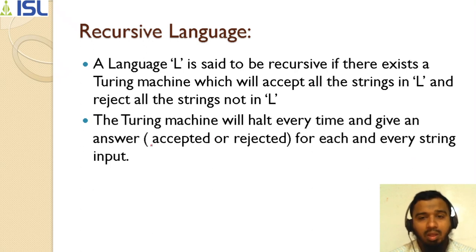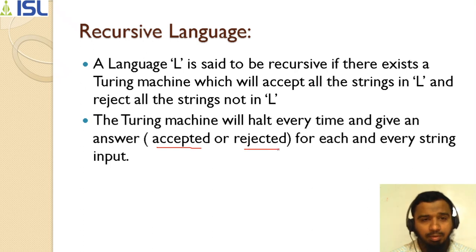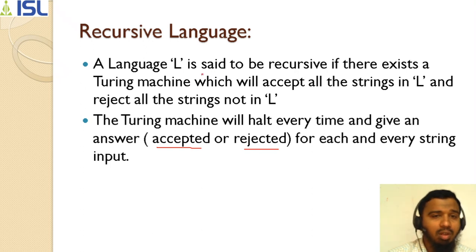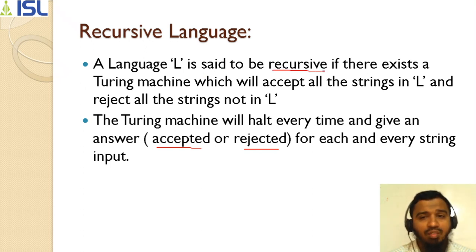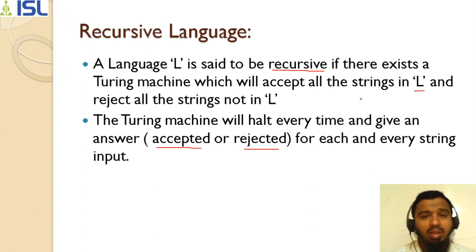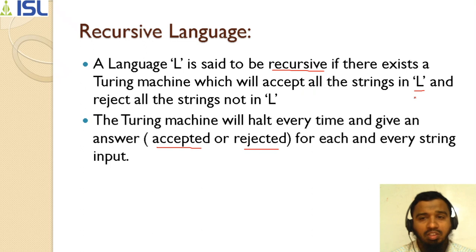Every time it gives you the result or answer — either accept or reject. Because when we say recursive, the Turing machine will accept all strings in L — that is recursive — and reject all strings not in L.